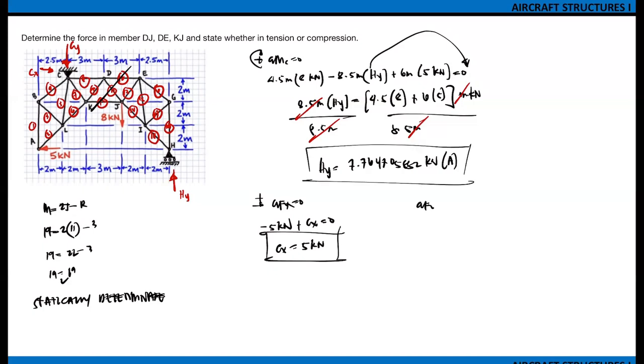And then summation forces Y equals 0, going up is positive. I have negative C sub Y, positive H sub Y, and then negative 8 kilonewton equals 0. Transpose C sub Y. So C sub Y equals positive H sub Y, which is store value A, and then minus 8 kilonewton. And that will result to C sub Y is negative 0.2352941176 kilonewton. So C sub Y is 0.235 kilonewton going up.